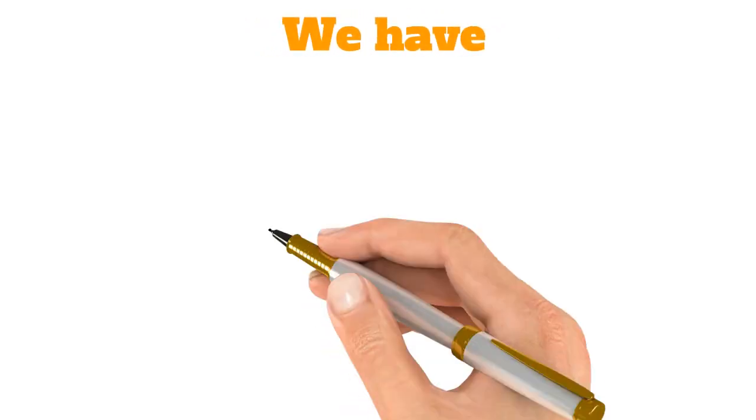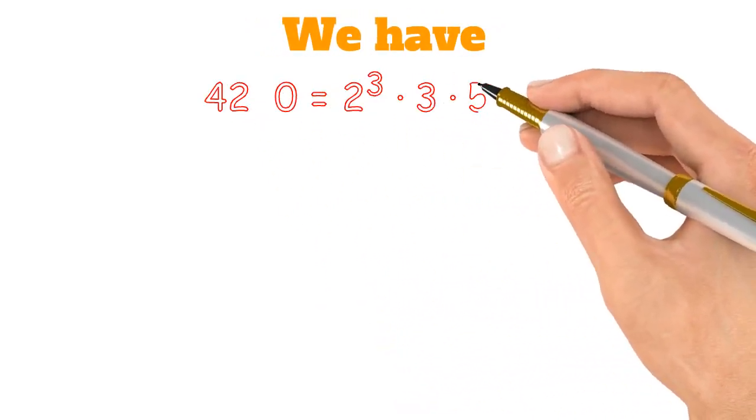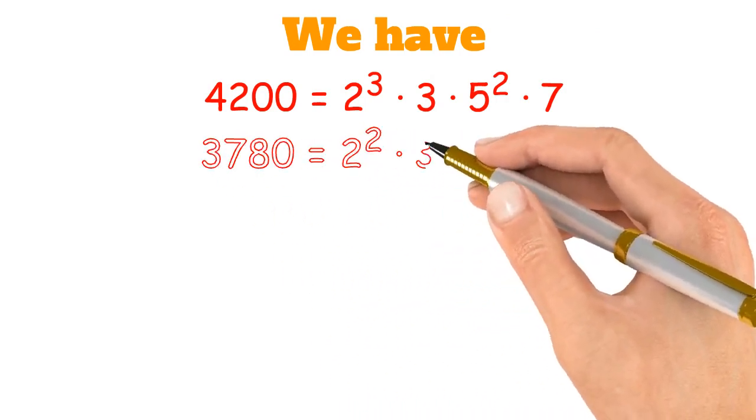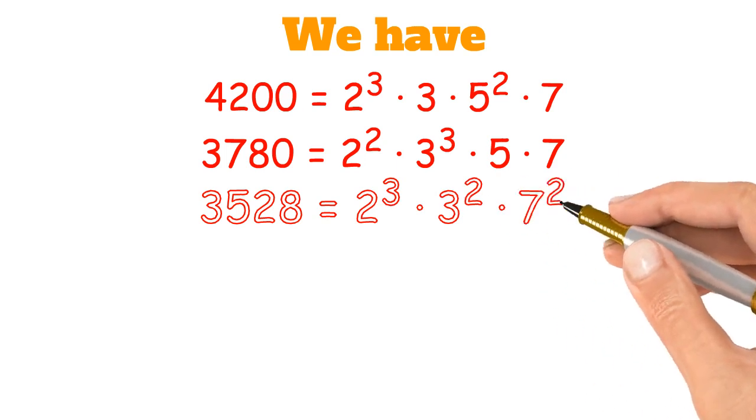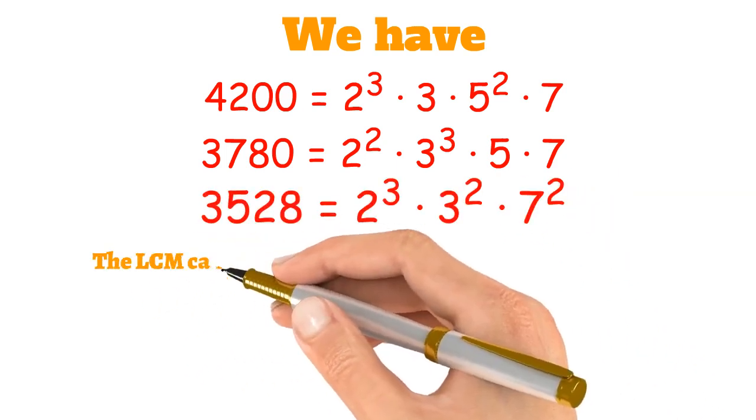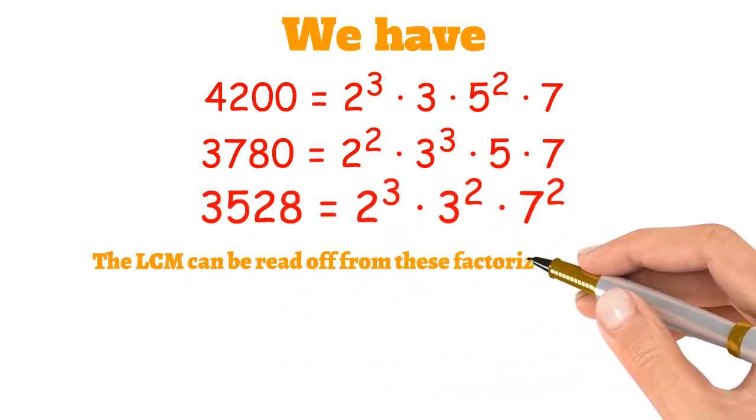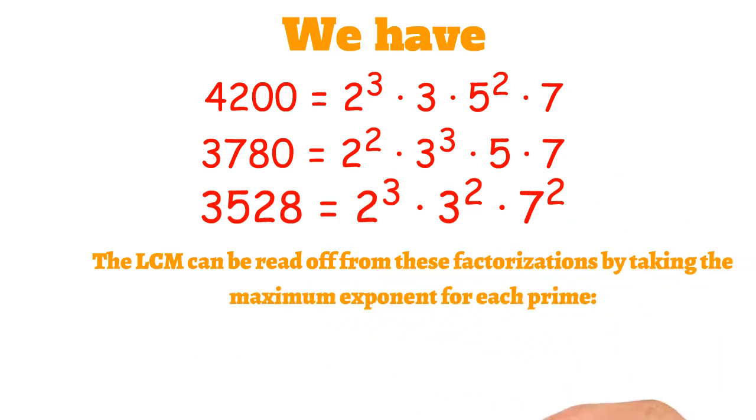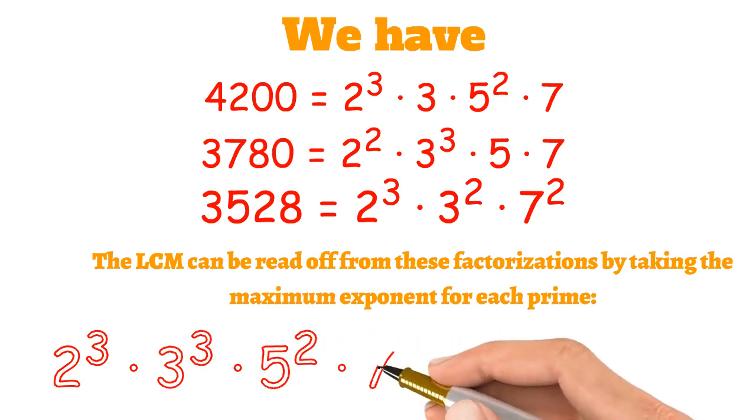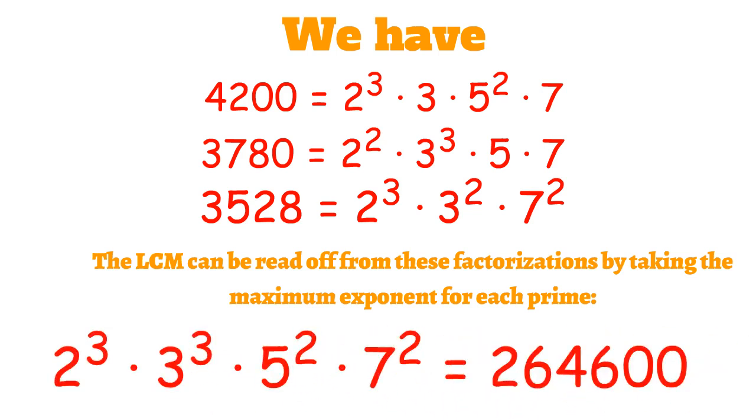We have the prime factorization of each of our three numbers: 4,200, 3,780, and 3,528. Using our method described earlier, the LCM can be read off from these factorizations by taking their maximum exponents for each prime. This gives us our prime factorization for the LCM, which amounts to 264,600.